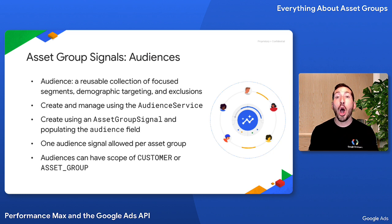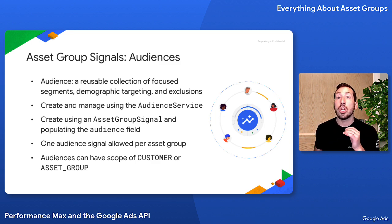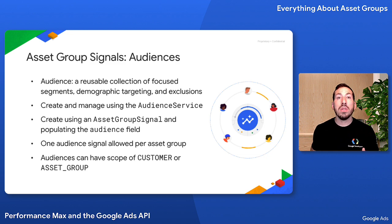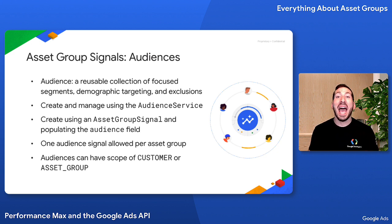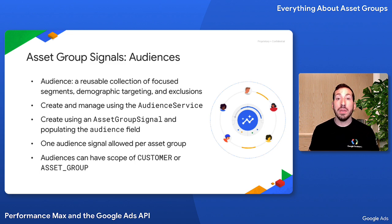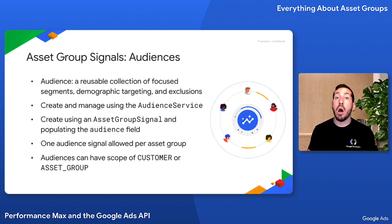By default, audiences are customer-level entities that can be used across the client account. This is reflected in the audience resource's scope field, which is set to customer by default. However, there is an option to create audiences that can only be used in a single asset group. In this case, the audience resource must have a scope of asset group, and you must set the asset group field on the audience with the resource name of the asset group it will be used in. If you upgrade the scope of an audience from asset group to customer, the asset group field on the audience will automatically be cleared.